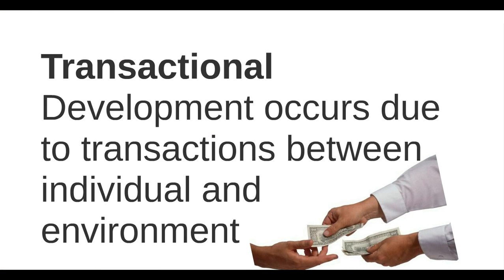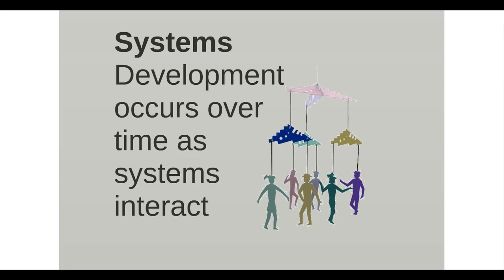There are other ways of looking at psychopathology. The transactional perspective looks at development and says it occurs due to transactions between individuals and their environment — more like the behaviorists such as Skinner, so it depends on what happens to you. Or people will approach psychopathology in children from the systems perspective, where development occurs over time as systems interact. All of us are part of multiple systems, like our family, and development occurs within those systems.